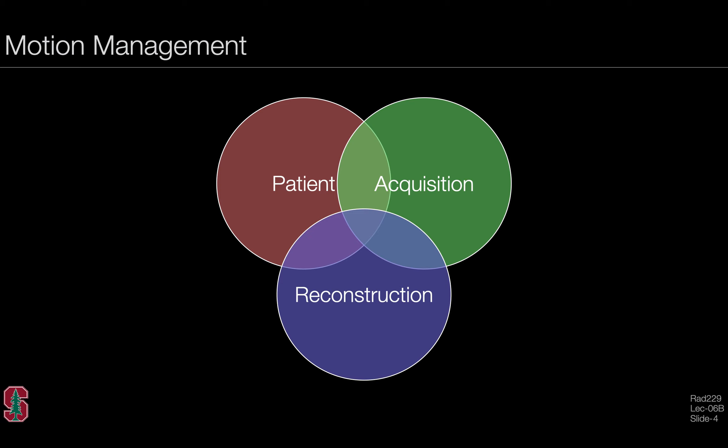When it comes to motion management, there are always several approaches which we can use individually or in combination. We can think about better ways to manage the patient or synchronize imaging to the patient's physiology. We can think about specific acquisition methods that might limit motion artifacts, and we can also consider reconstruction methods that could limit motion artifacts.